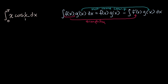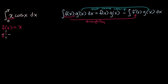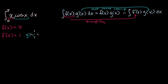Between x and cosine of x, which one gets more simple when you take its derivative? Well, the derivative of x is just one, so I'm going to make that my f of x. So f of x is x, and f prime of x is equal to one. Then what would my g prime of x be? My g prime of x is cosine of x — if I take its anti-derivative, it doesn't get more complicated. The anti-derivative of cosine of x is sine of x. So g prime of x equals cosine of x, and g of x, the anti-derivative of cosine of x, is just sine of x.